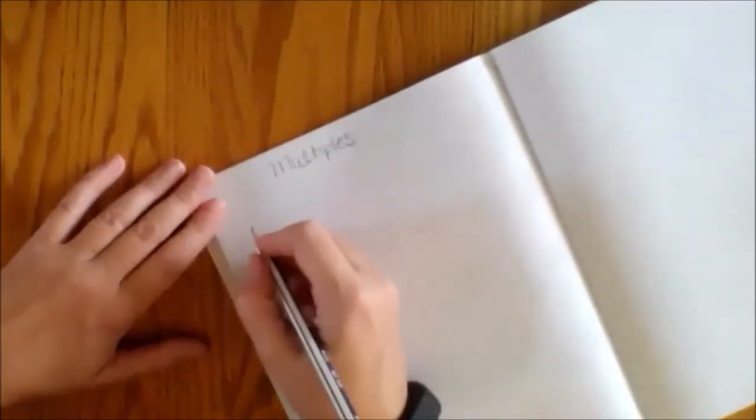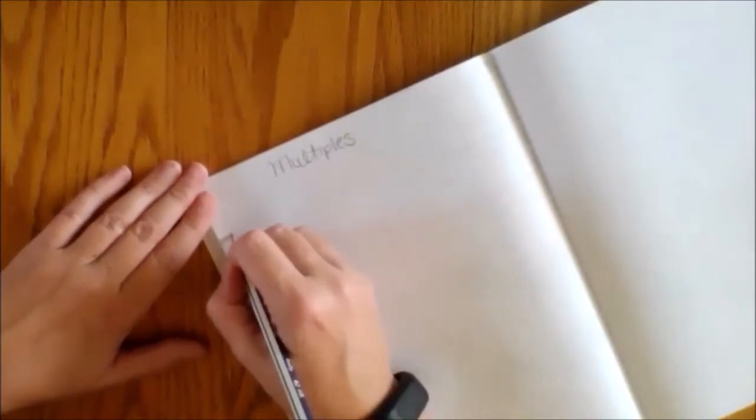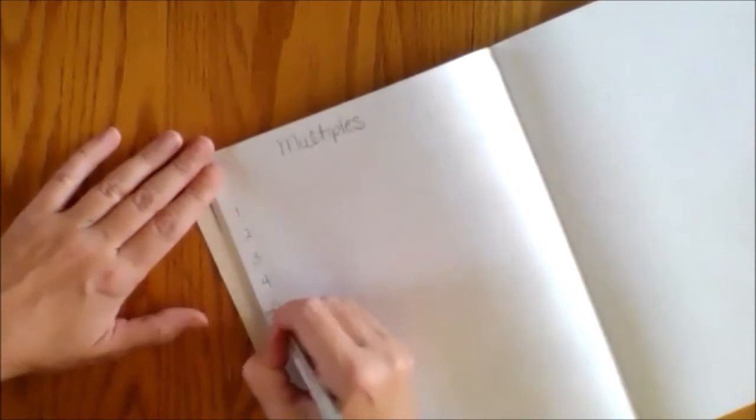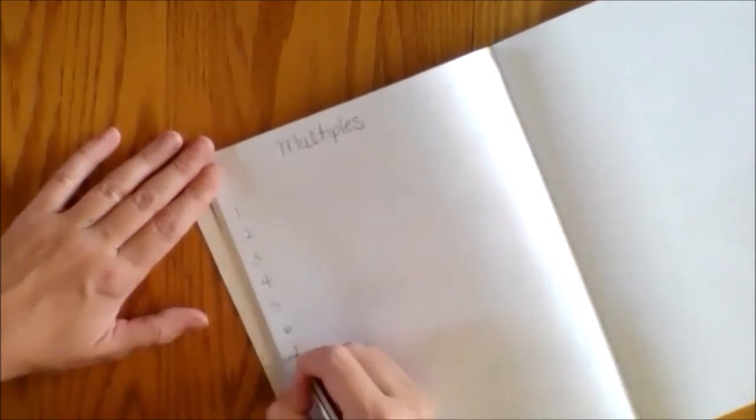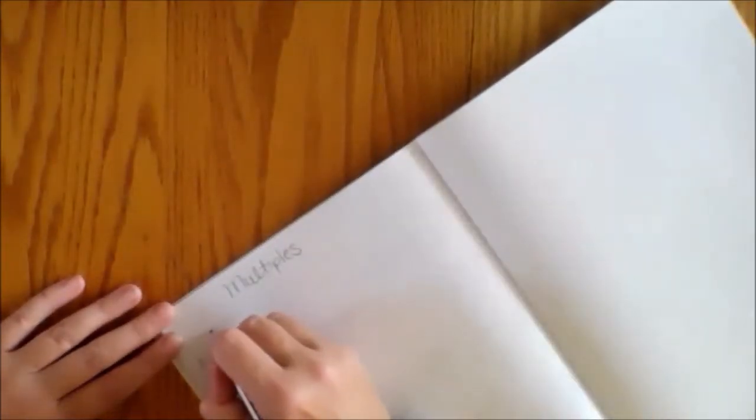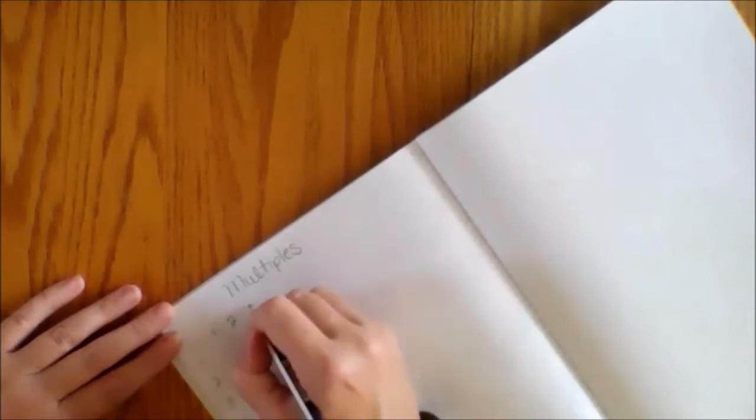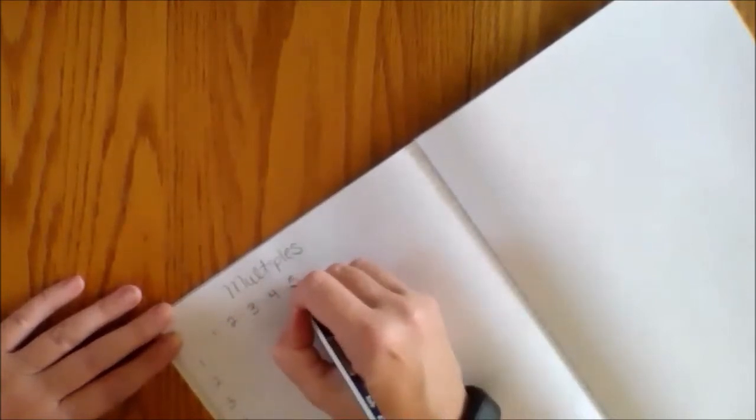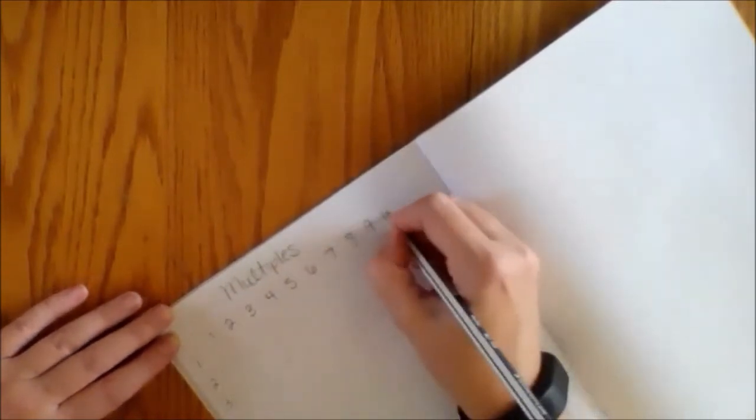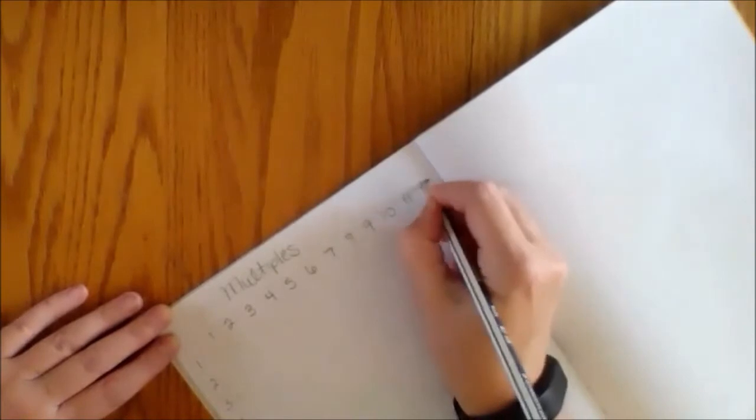So I'm going to write one through 12 across the side of my paper. 1, 2, 3, 4, 5, 6, 7, 8, 9, 10, 11, and 12 along the side of my paper. I'm going to do the same thing across this top part. 1, 2, 3, 4, 5, 6, 7, 8, 9, 10, 11, and 12.